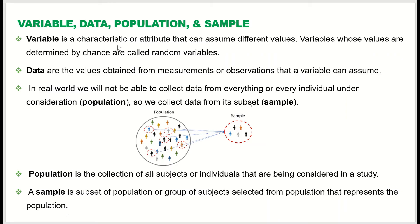Let's now talk about variable, data, population, and sample. A variable is a characteristic or attribute that can assume different values. For example, temperature is a variable, or the height of an individual is a variable — these are characteristics or attributes that can assume different values.